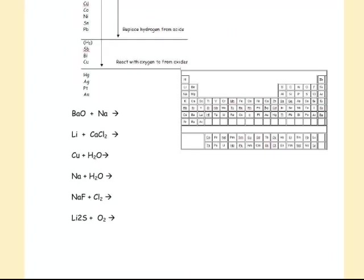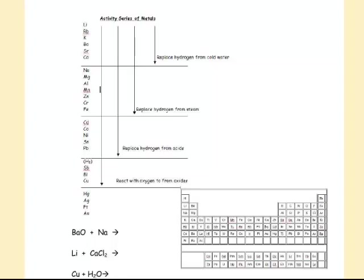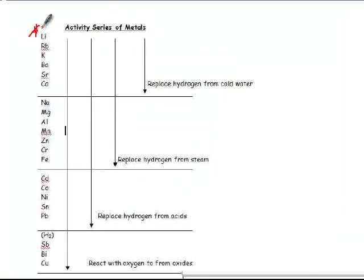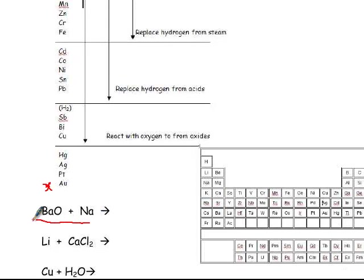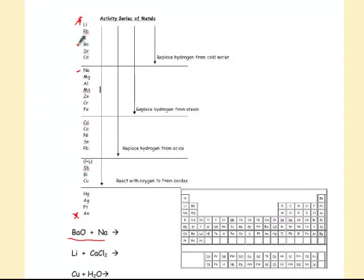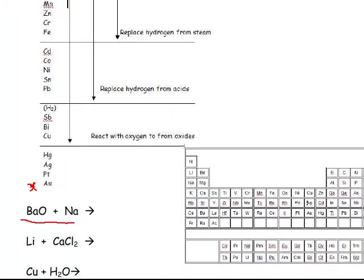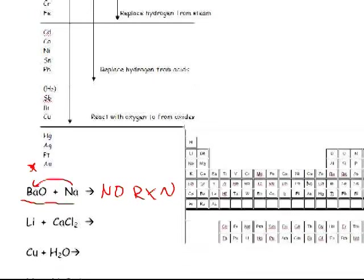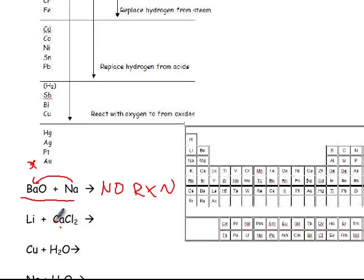After that, we have something called an activity series. The activity series of metals is a list of metals where the most reactive metals are at the top and the least reactive are at the bottom. In a single replacement reaction, in order for Na to replace Ba, Na must be more reactive than Ba. But Ba is higher on the list, meaning Ba is more reactive than Na — so Na cannot replace Ba. However, lithium is higher on the list than calcium, so that reaction will occur.